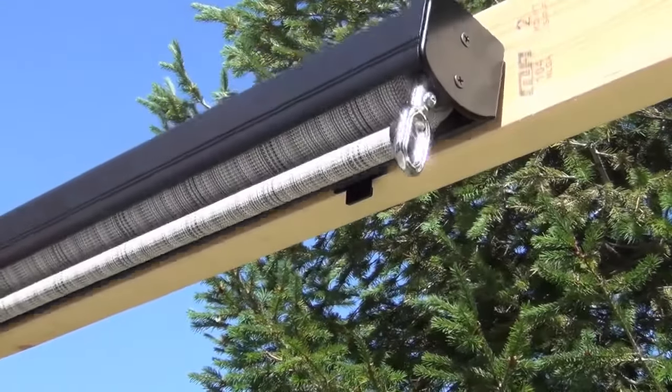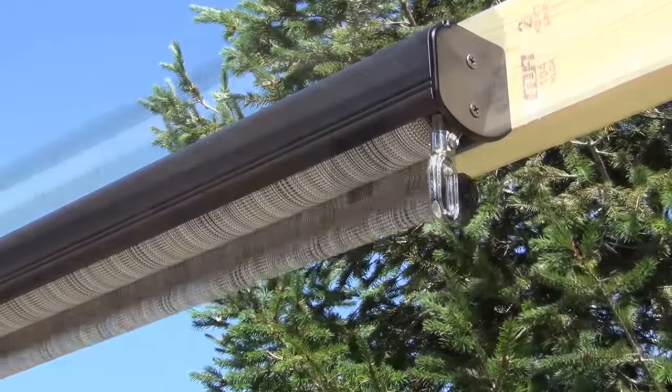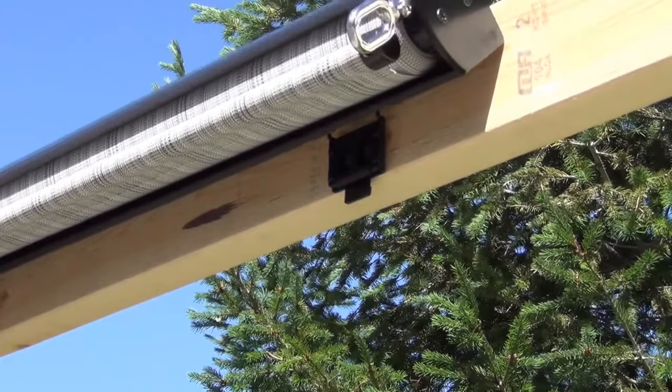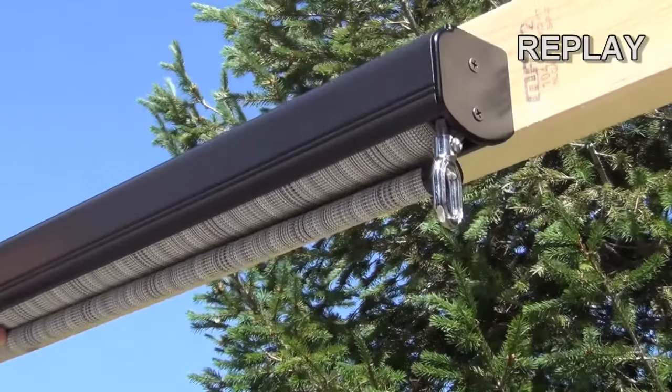For wall installations, hook the back of the valence on to the top of the valence brackets. Then rotate the shade down and click it into place.